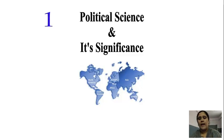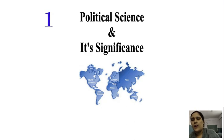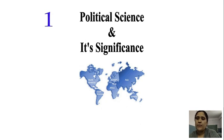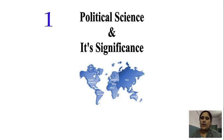Good morning. As in the previous class, we have discussed about the scope of political science. Political science is nothing but a science which deals with politics. It enables us to know about the relationship between the state and government. We have discussed about the different definitions given by different political writers, broadly classified into two types: traditional classification and modern classification.